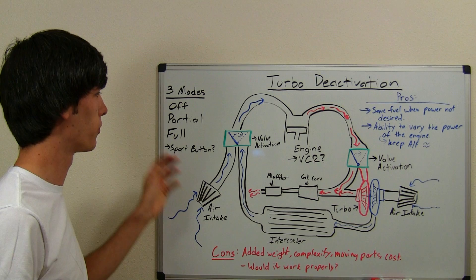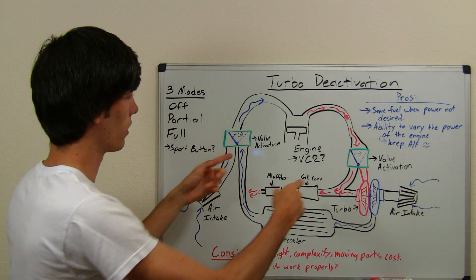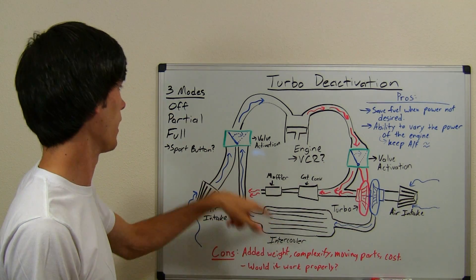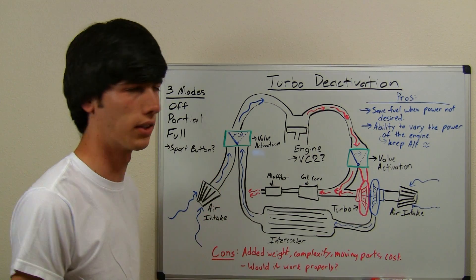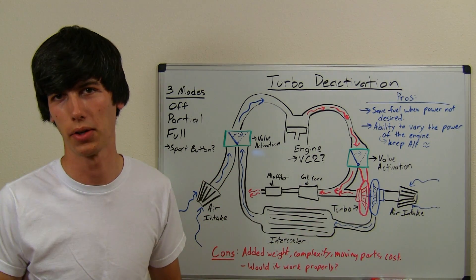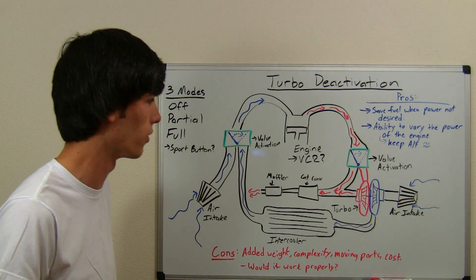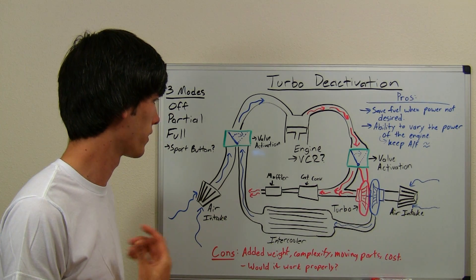And then a third mode - full - which just means you leave it as shown here, and you use the turbo constantly. Say you're at a track, you don't want to turn it off every now and then. You're going to have all kinds of lags and things like that.